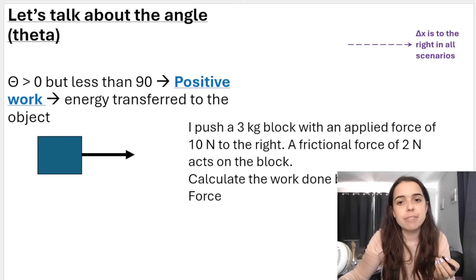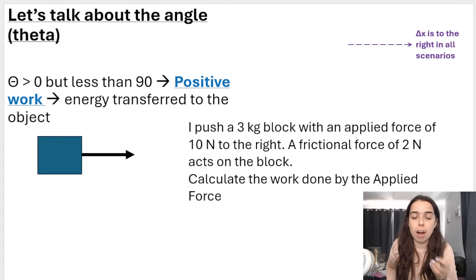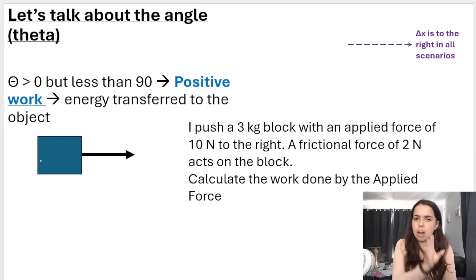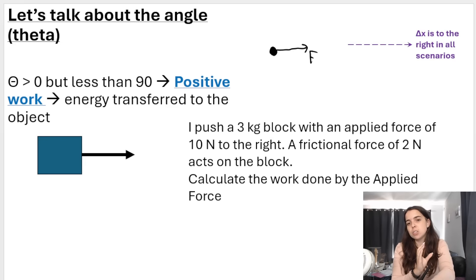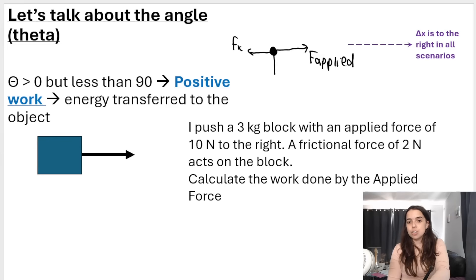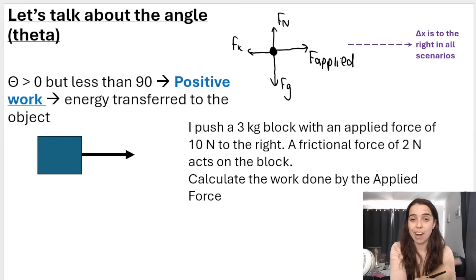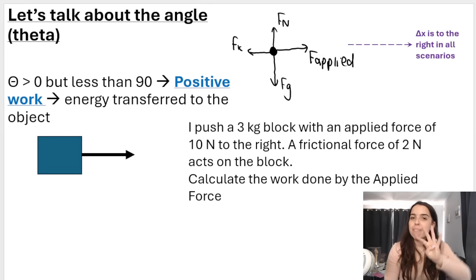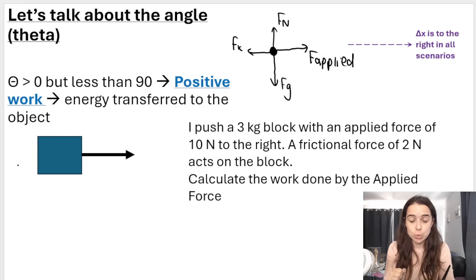Let's do an actual example. I push a 3 kg block with an applied force of 10 Newtons to the right; a frictional force of 2 Newtons acts on the block; the block moves 4 meters to the right. Calculate the work done by the applied force. It's always a good idea to draw a free body diagram: applied force to the right (FA), friction to the left (FK), weight straight down (FG), and normal force straight up (FN). There are four forces, so technically I could calculate work done by each. But this question only asks for the work done by the applied force, so I write: W = F × Δx × cos θ.